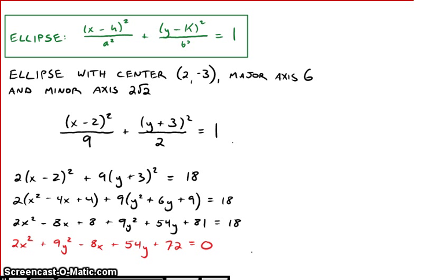Just in case you want to know the steps, you have to take care of the exponent first. If you were to multiply this out, (x - 2) squared is this perfect square trinomial. (y + 3) squared is this trinomial. Once you write that out then you can go ahead and multiply everything by 2 and multiply everything by 9, combine like terms, and that's what you get.